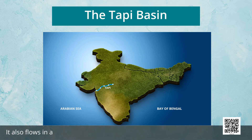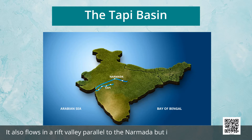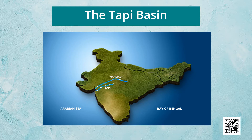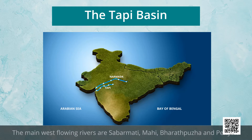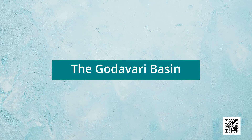The Tapi rises in the Satpura ranges in the Betul district of Madhya Pradesh. It also flows in a rift valley, parallel to the Narmada, but is much shorter in length. Its basin covers parts of Madhya Pradesh, Gujarat, and Maharashtra. The coastal plains between the Western Ghats and the Arabian Sea are very narrow, so the coastal rivers are short. The main west-flowing rivers are Sabarmati, Mahi, Bharatpuzha, and Periyar.